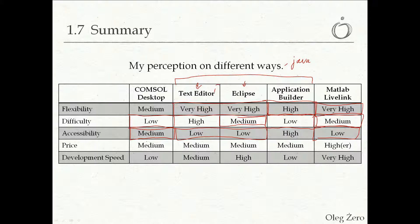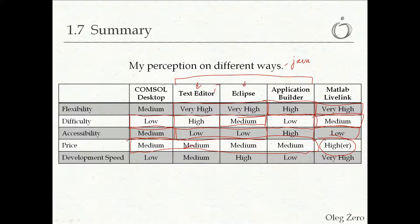Regarding price: the console itself isn't an inexpensive tool — it does take money to pay for the license, so I'd rate it as medium. Generally all four main methods are medium, because you don't have to purchase any additional features. MATLAB Live Link comes at an additional cost, but the cost isn't that much higher compared to the standard license, so I'd say it's just slightly higher.